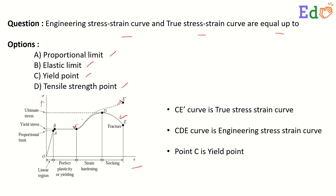The two curves are identical up to point C. Therefore, the correct option is (c) yield point.